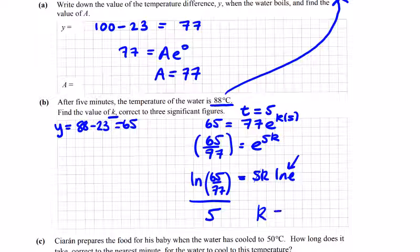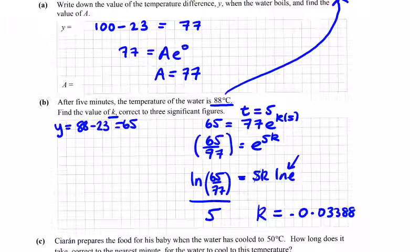We get k is equal to, so that's going to be minus 0.03388. And three significant figures will be minus 0.0339 for k, correct, to 3 significant figures.